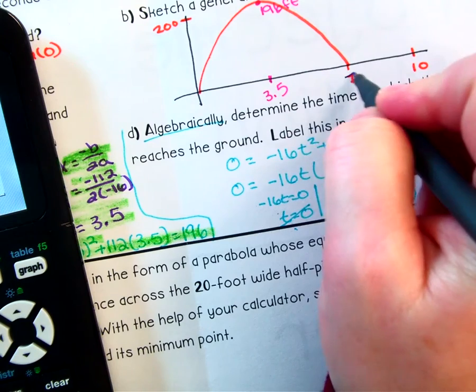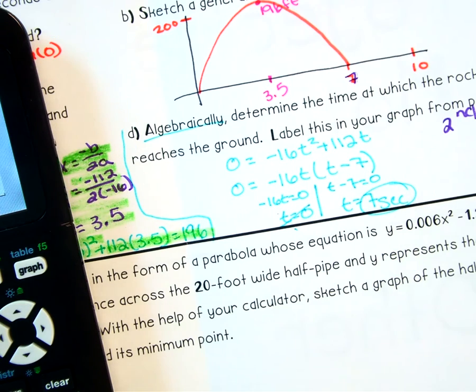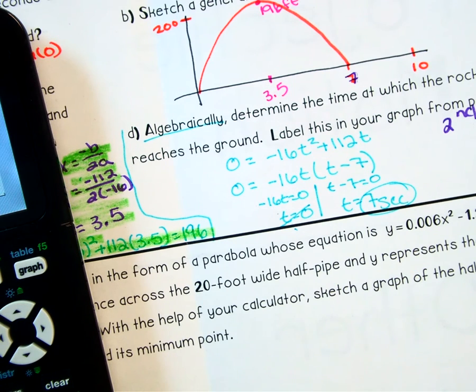And I already had my 7 on here from when I made my picture. So you can use the calculator to help you find those values as well if you're unsure of your work there. All right.